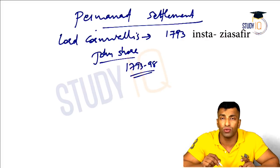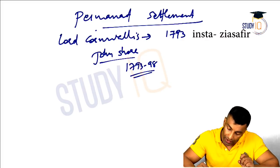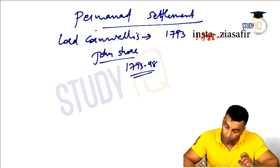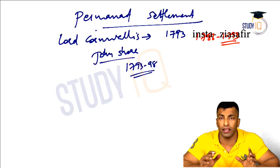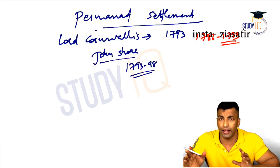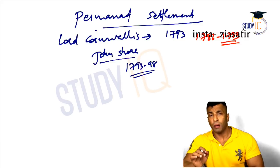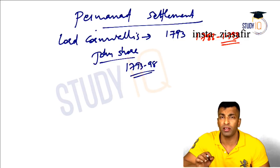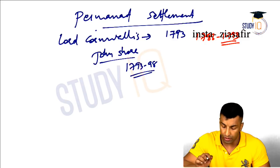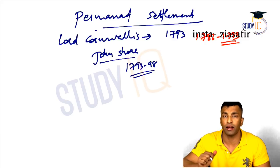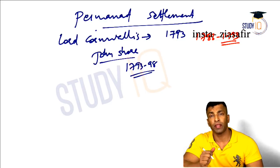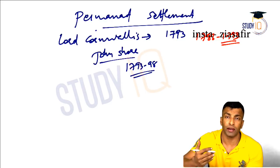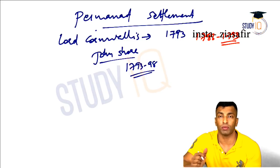Lord Cornwallis was the Governor General from 1786 to 1793, and 1793 was his last year. He came back to India for a few months later as Governor General, but 1793 is the most important year because there were certain other reforms — police reforms, civil service reforms, judicial reforms — all happened in this particular year along with permanent settlement.